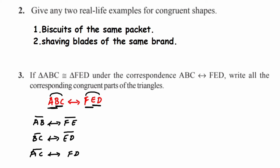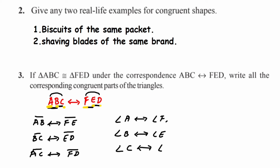Now for the angles: angle A will be the same as angle F, angle B will be the same as angle E, and angle C will be the same as angle D. So angle A is congruent to angle F, angle B is congruent to angle E, and angle C is congruent to angle D. That's it — that was the answer for the third question.